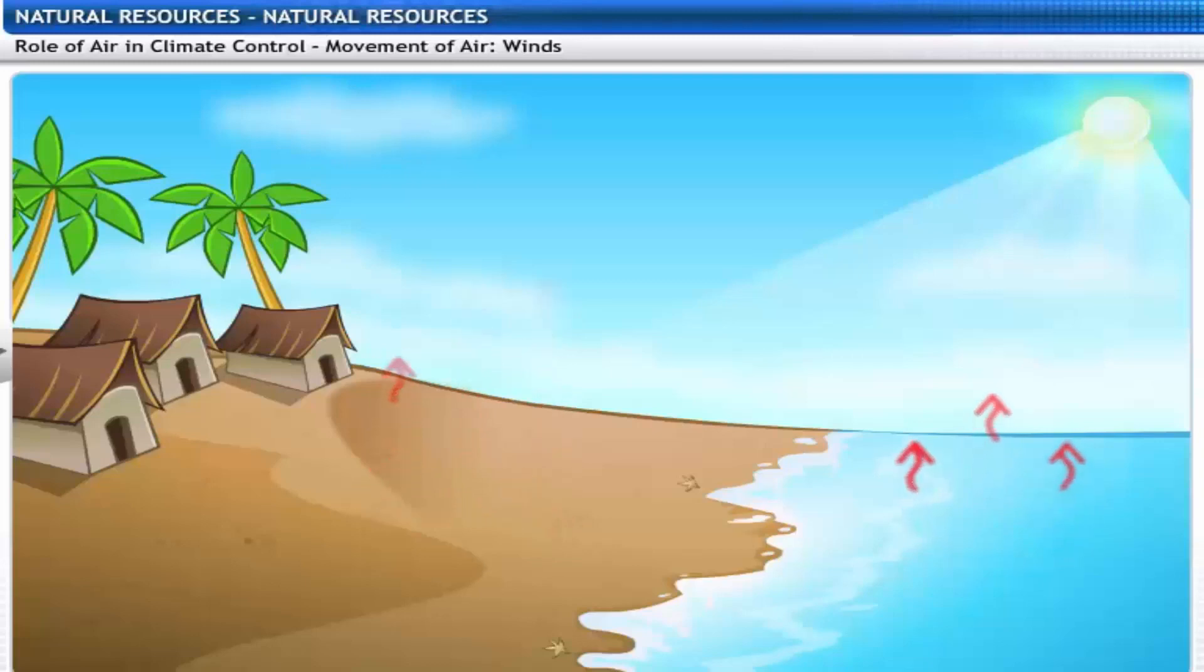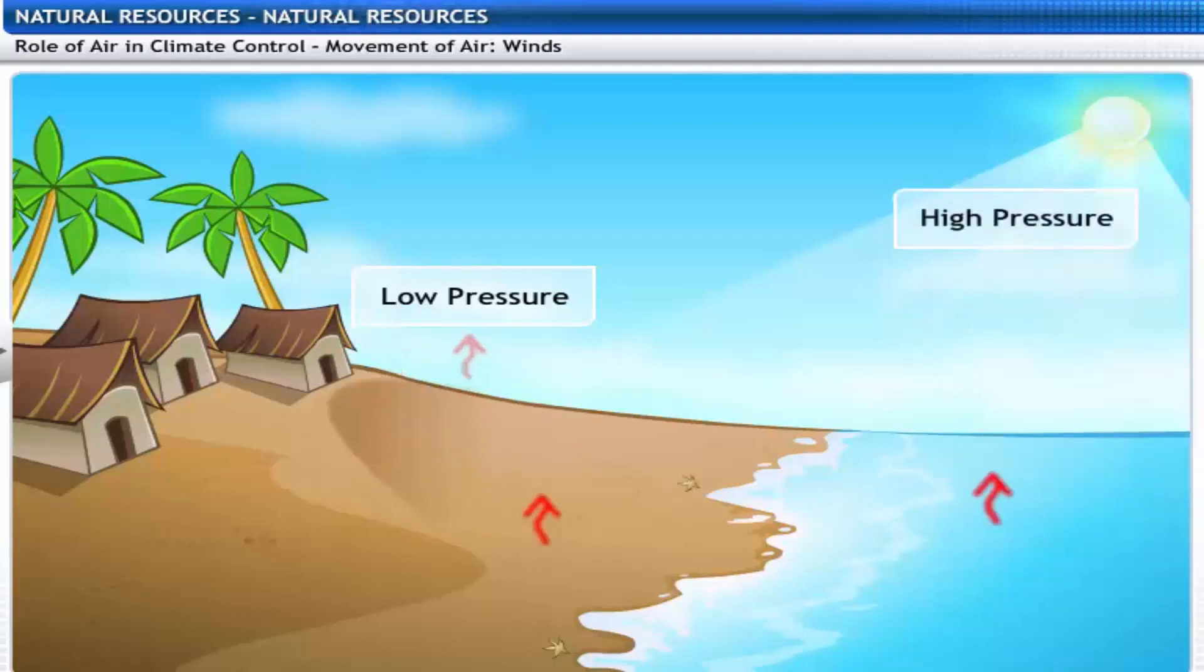Since soil gets heated faster than water, the air above land also gets heated faster than the air above water bodies. During the day, heated air above the land starts rising, creating a low pressure area. This causes air to move from a high pressure area over the sea to a low pressure area over the land. This creates a sea breeze. This is the reason why land near water bodies gets colder faster.